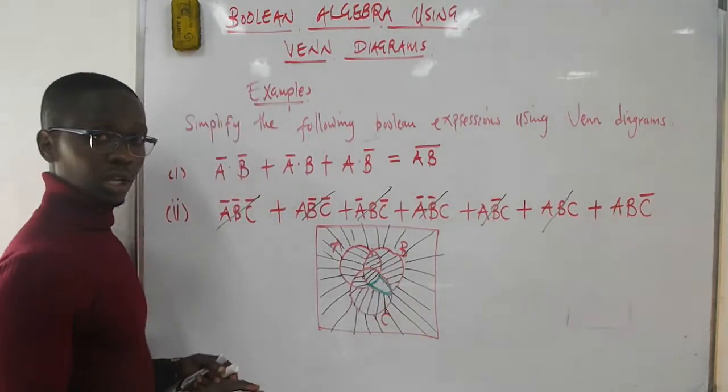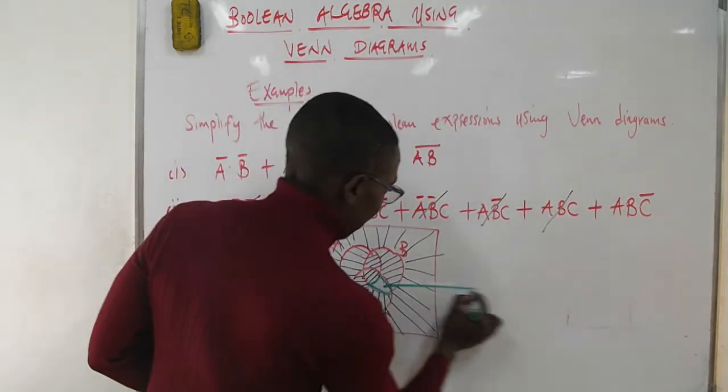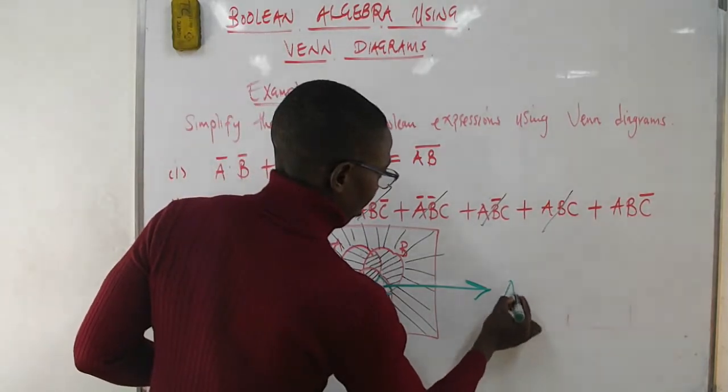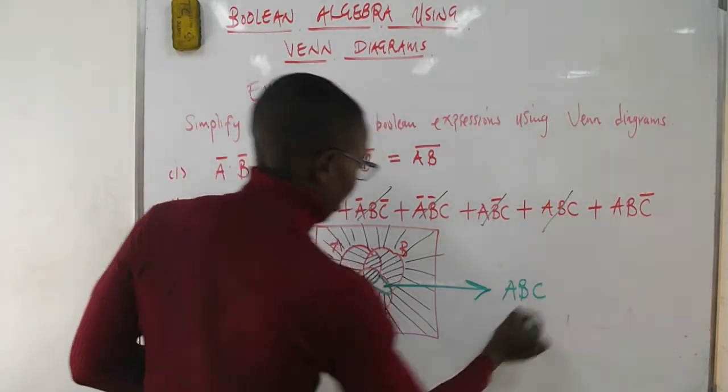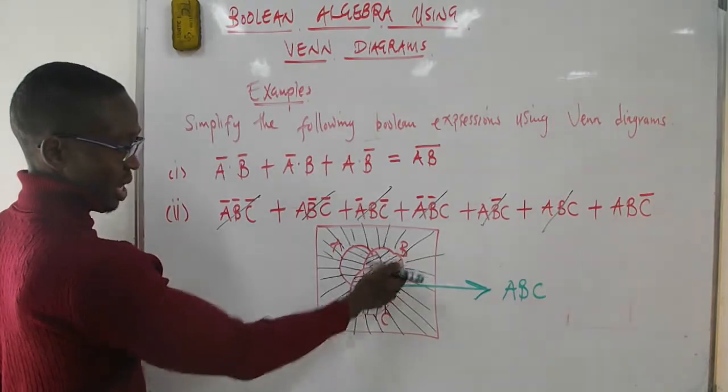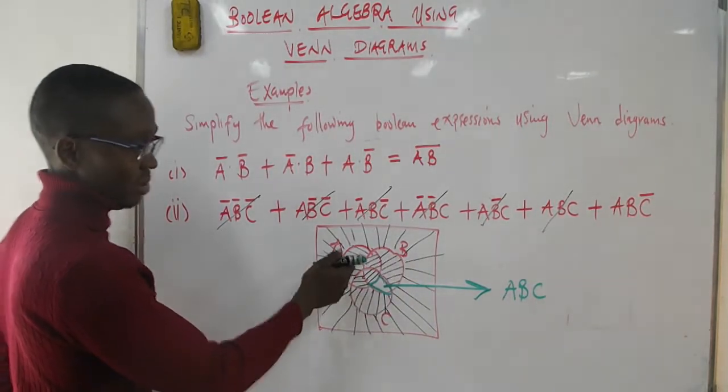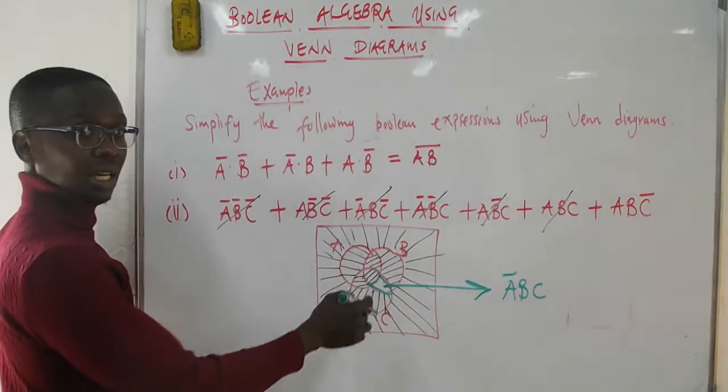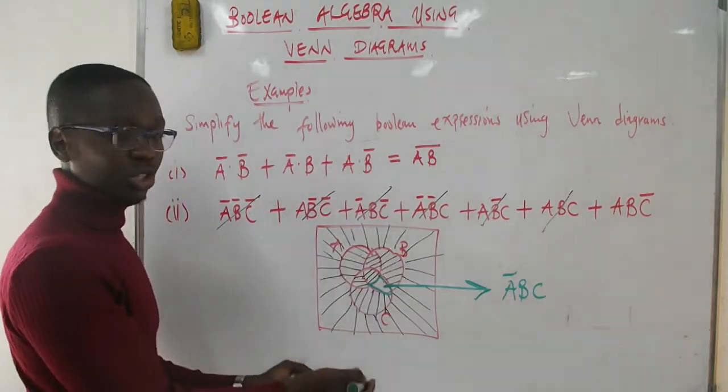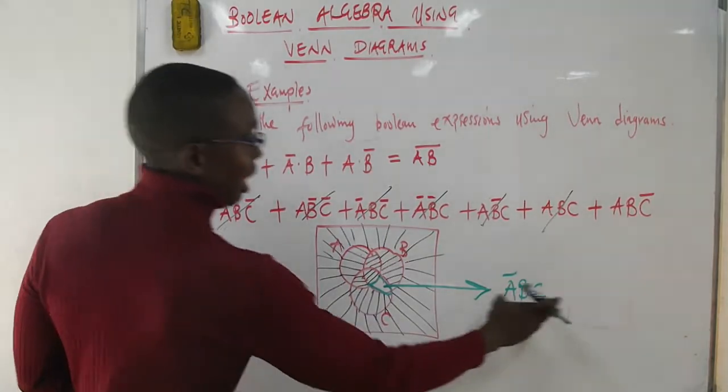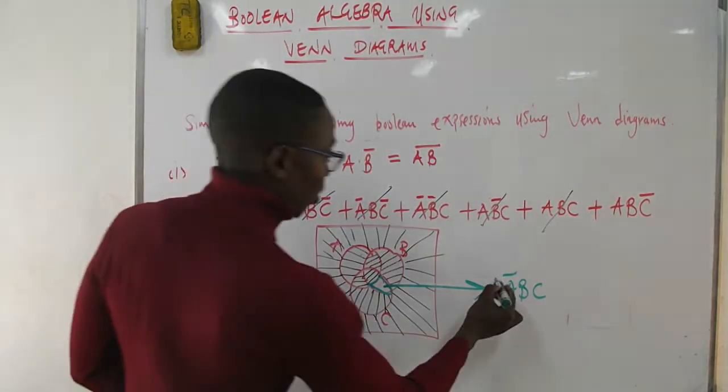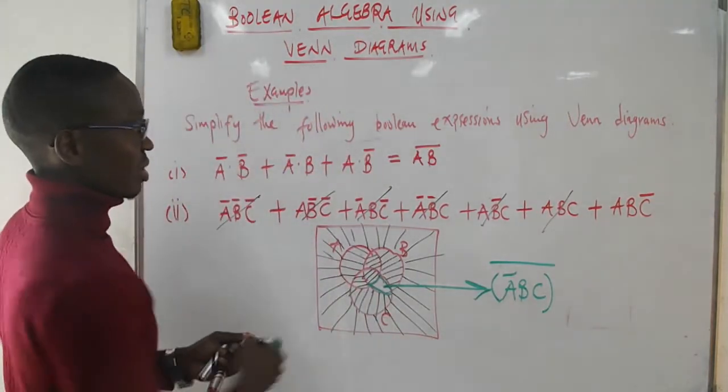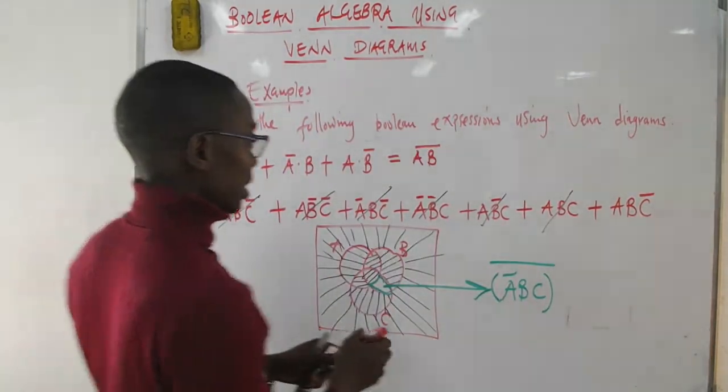From our previous lecture, the unshaded region is defined as A̅BC, where B and C appear but A does not. But we're describing the shaded region, which is outside this set. Therefore, simplifying gives us the complement of A̅BC.